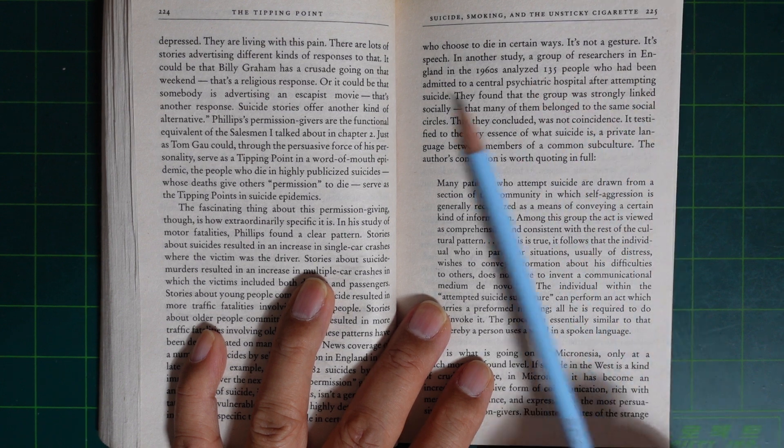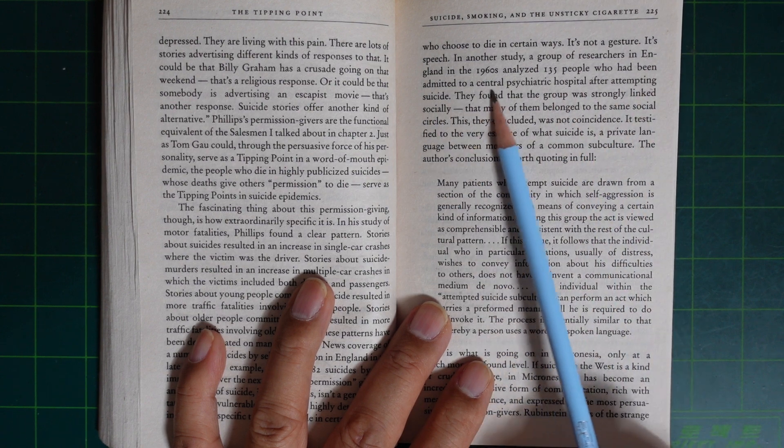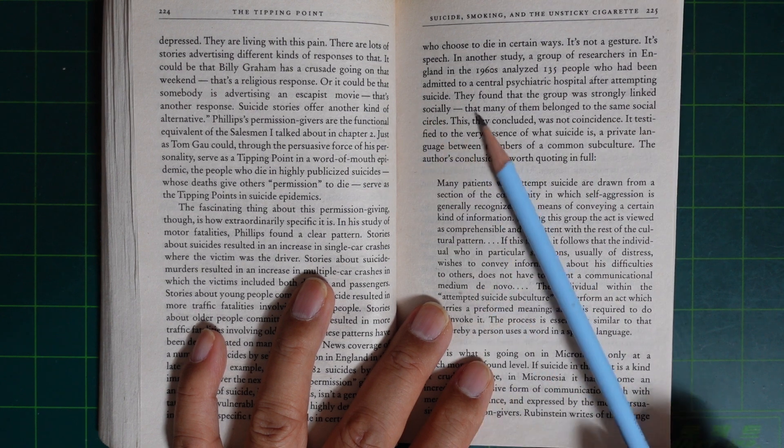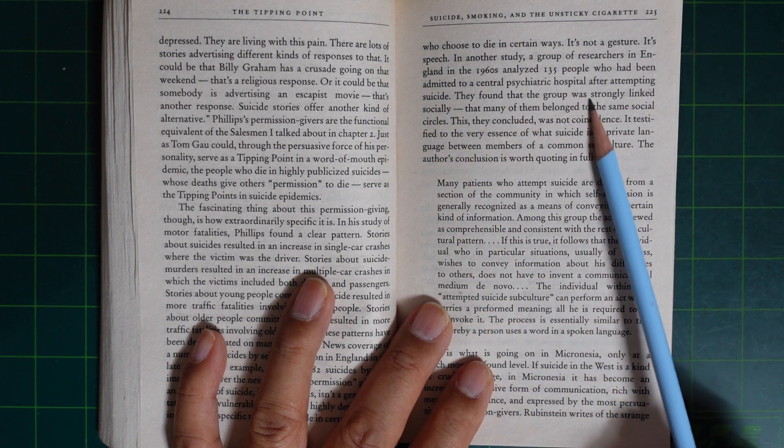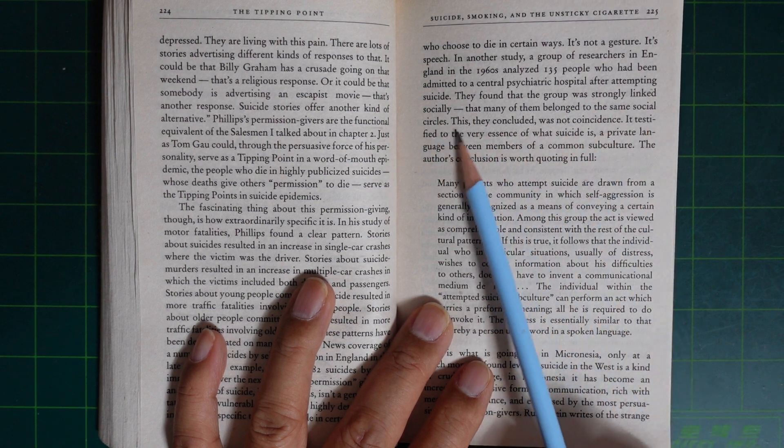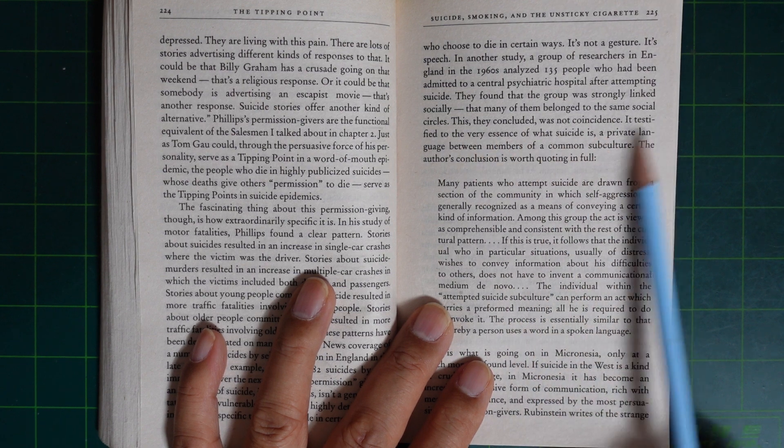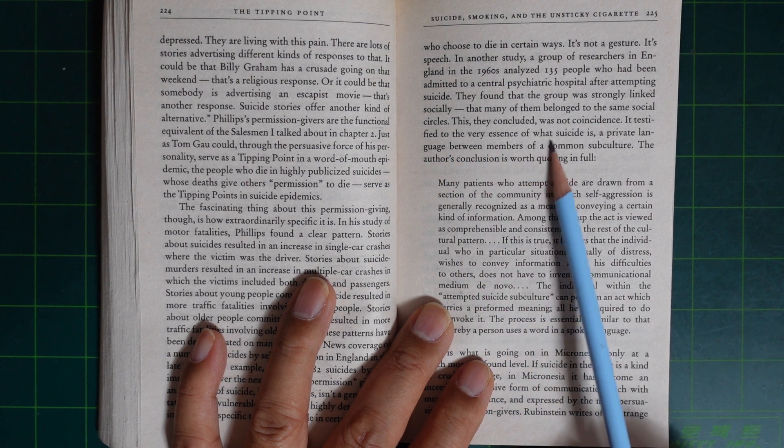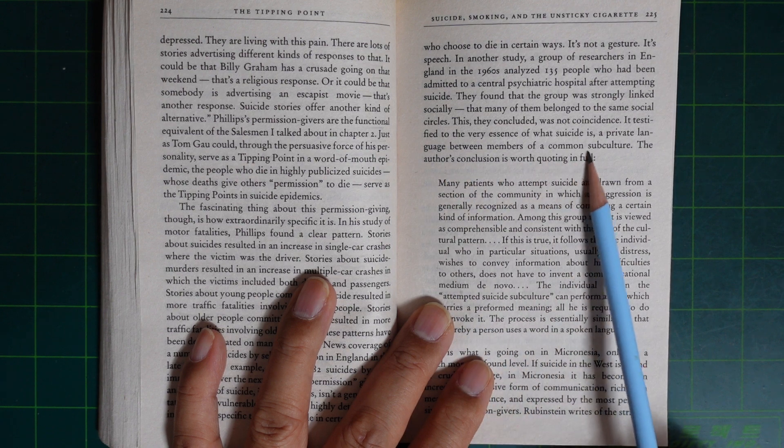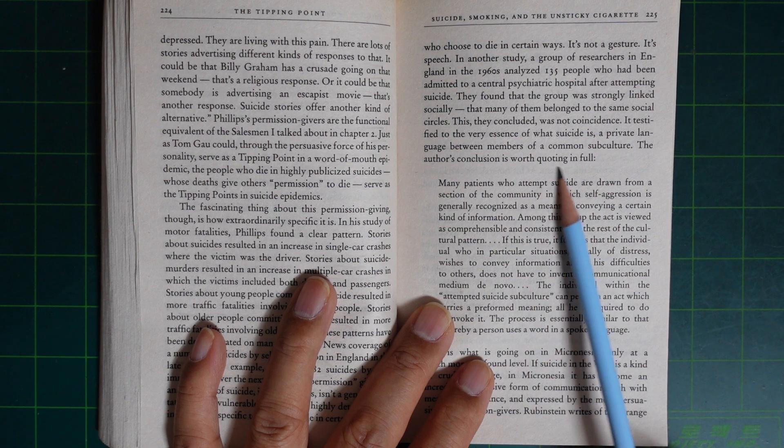In another study, a group of researchers in England in the 1960s analyzed 135 people who had been admitted to a central psychiatric hospital after attempting suicide. They found that the group was strongly linked socially, that many of them belonged to the same social circles. This, they concluded, was not coincidence. It testified to the very essence that suicide is a private language between members of a common subculture. The author's conclusion is worth quoting in full.